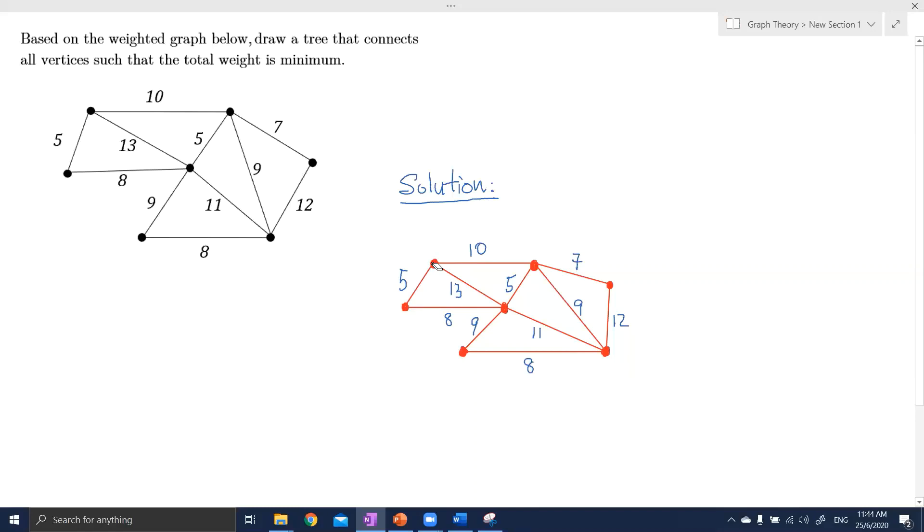So now if we start with this cycle, this triangle, we have 5, 8, and 13. So in this small triangle, this is a cycle. The maximum weight is this edge which is 13. So we can actually erase it, remove it.